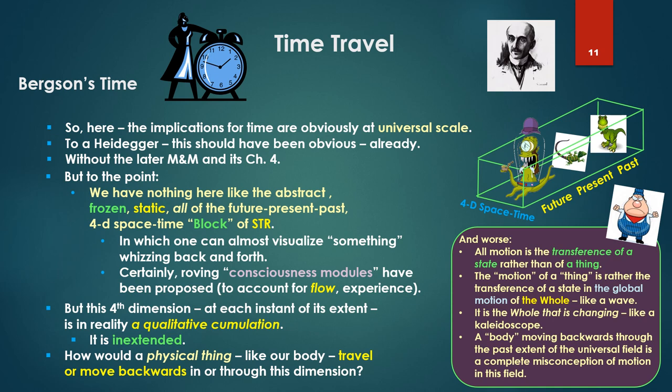But this fourth dimension, at each instant of its extent, is in reality a qualitative accumulation. And it is inextended. It does not have actual physical extension. How then would a physical thing like our body travel or move backwards in or through this dimension? And a bit worse, as we noted earlier, in Matter and Memory, as Bergson described it, all motion is the transference of a state, rather than of a thing. The motion of a thing, be an object, a billiard ball, a person, is rather the transference of a state in the global motion of the whole, like a wave.